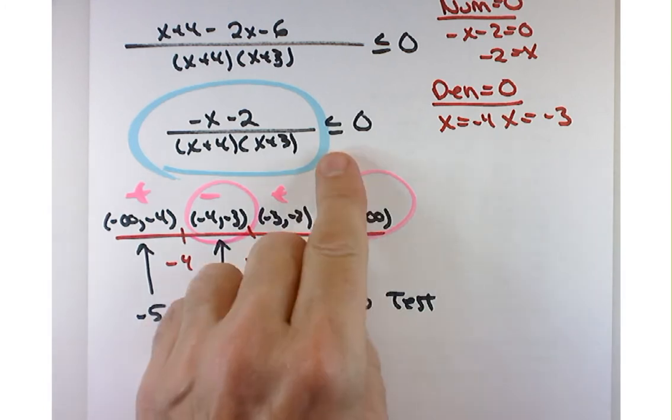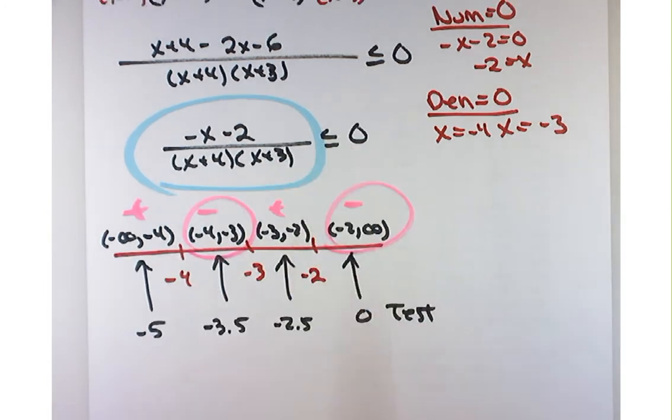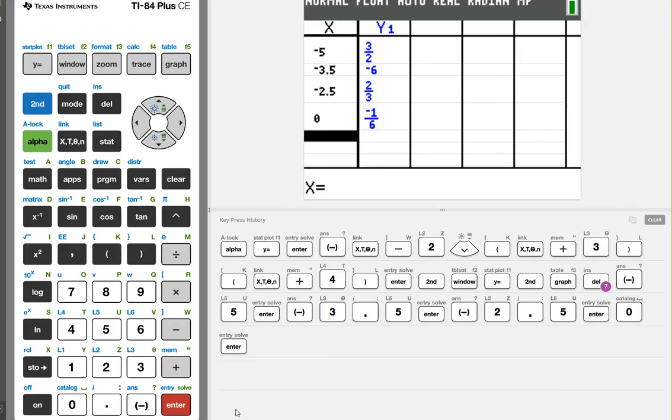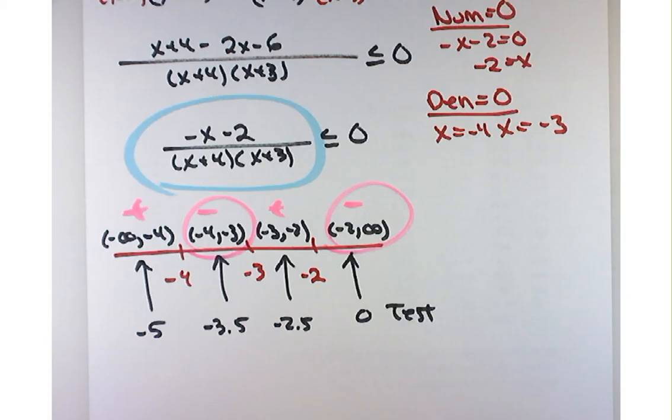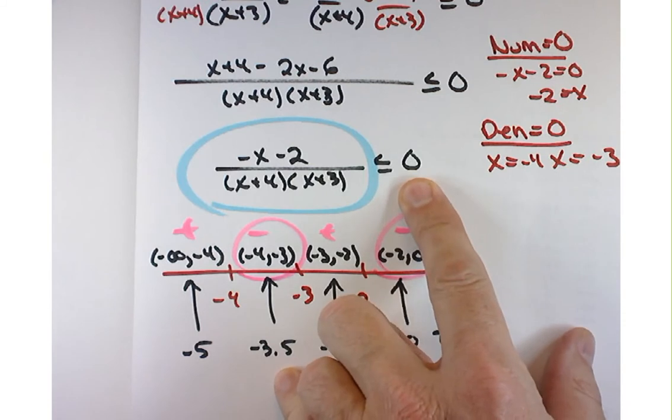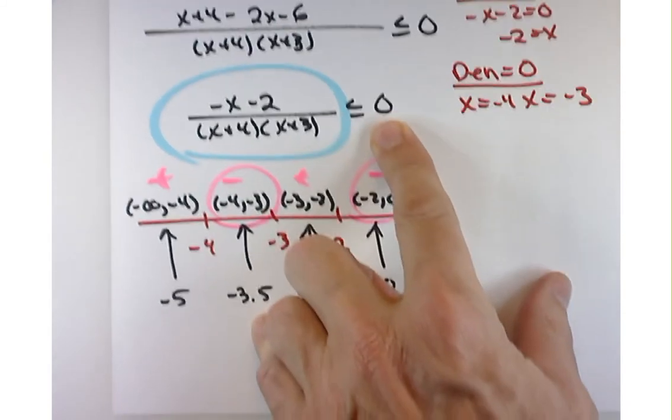Because this is a less than or equal to, you've got to be careful about which endpoints you include. Now, including them means using a bracket. Which one's going to get the bracket? Let's test it out. Your calculator can actually tell you. So if you type in negative 2, you end up with a 0. Well, is 0 less than or equal to 0? Is that true? Yeah, so you can use the negative 2.